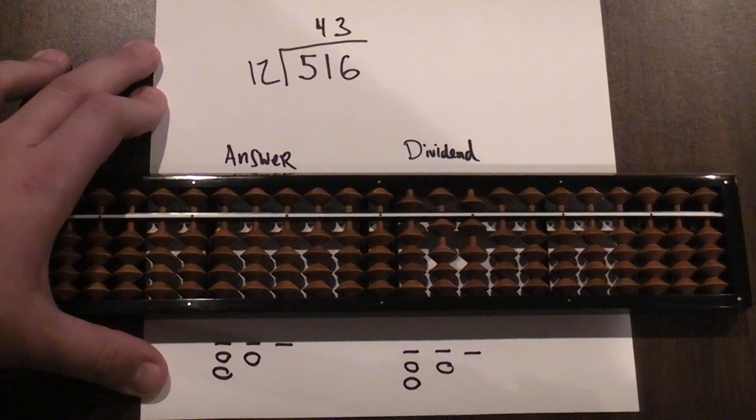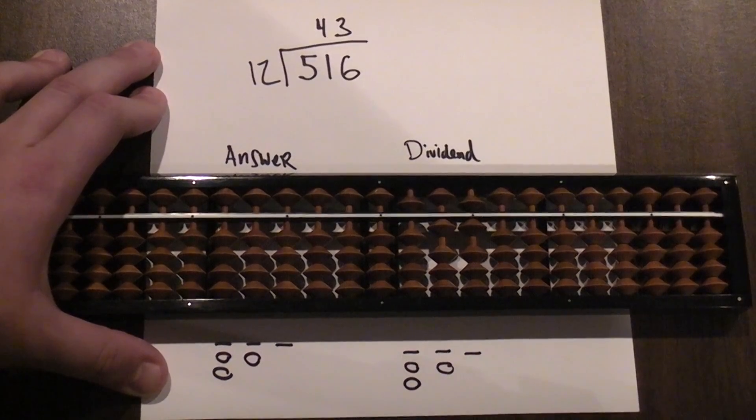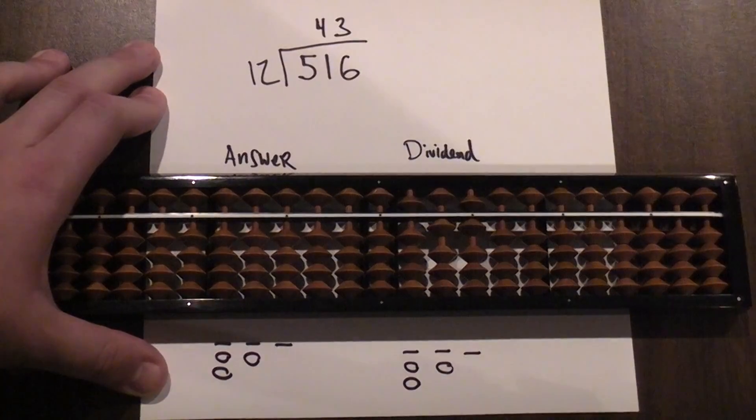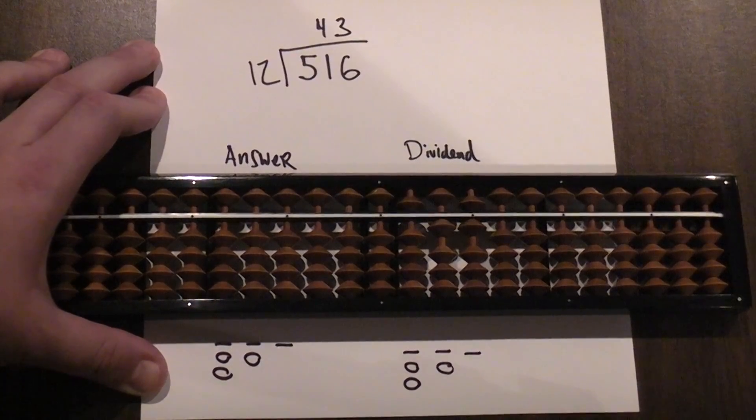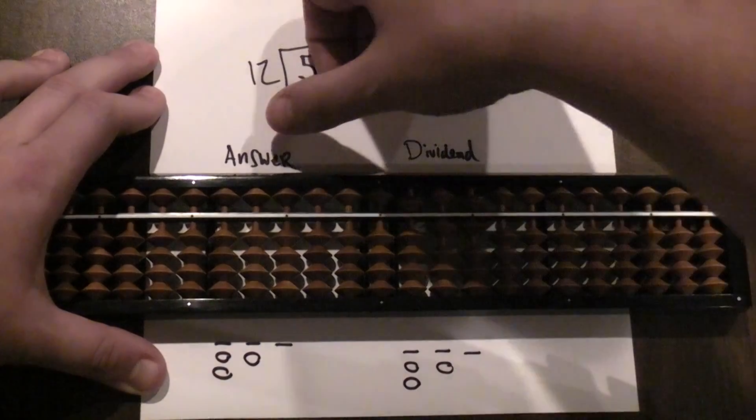A three-digit answer? The smallest three-digit number we have is 100. So 12 times 100, that's 1200 - that's far larger than 516. So I know I'm going to get back a two-digit answer.